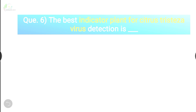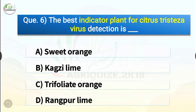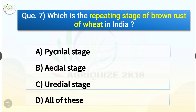Unlike viroids, virusoids require that the cell also be infected with a specific helper virus. Question number six: The best indicator plant for citrus tristeza virus detection is dash. The options are sweet orange, Kagzi lime, trifoliate orange, or Rangpur lime. The correct answer is option B, Kagzi lime. Kagzi lime is widely accepted as the indicator host for detection of citrus tristeza virus in citrus growing countries.